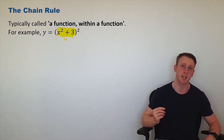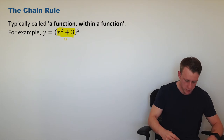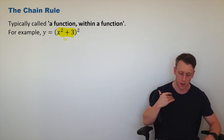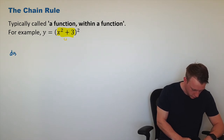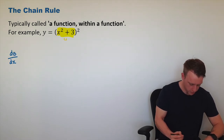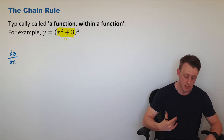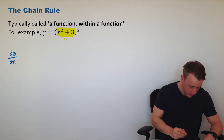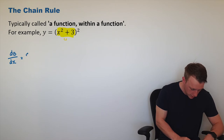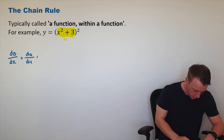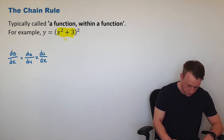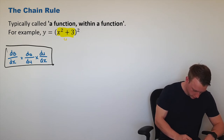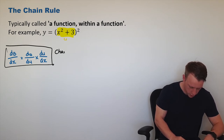We've got a technique for that and it's called the chain rule. It's easiest to express it in Leibniz notation — that dy/dx notation — where we say that the derivative of y with respect to x, which is what dy/dx stands for, is equal to dy/du, the derivative of y with respect to u, multiplied by du/dx. That is known as the chain rule.